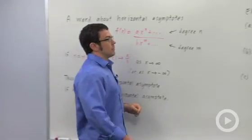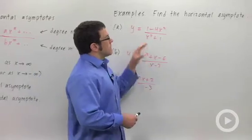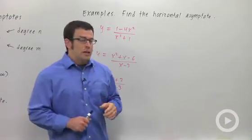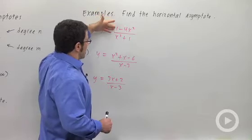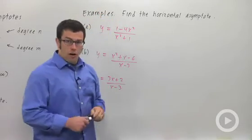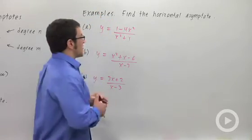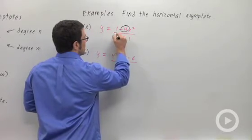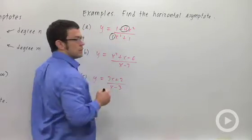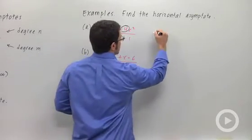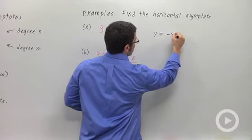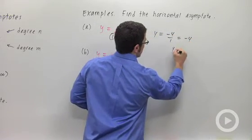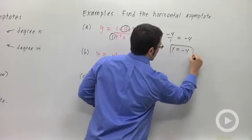Let's take a look at an example. It says find the horizontal asymptote. All you have to do is first ask yourself, are the degrees the same? And if they are, then the horizontal asymptote is going to be leading coefficient over leading coefficient. So the horizontal asymptote is y equals negative 4 over 1, which is y equals negative 4. That's our answer.